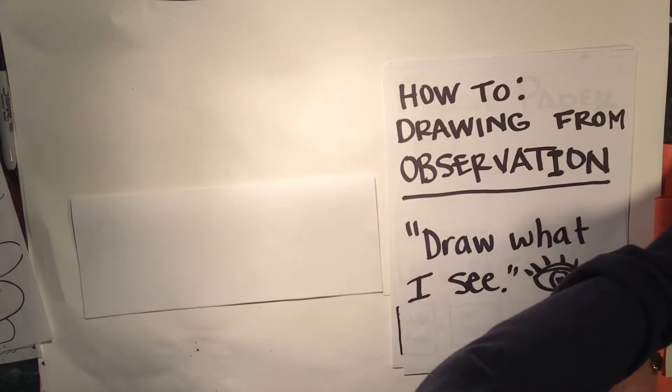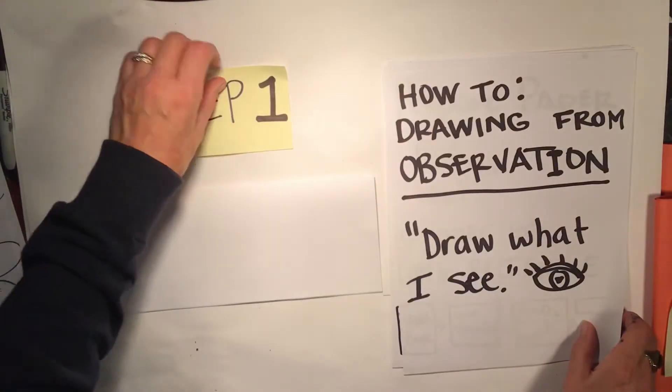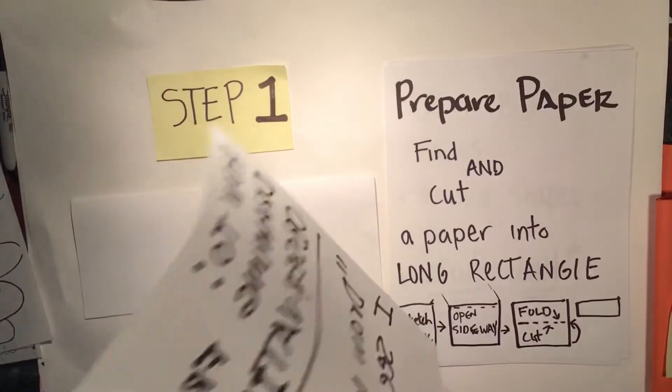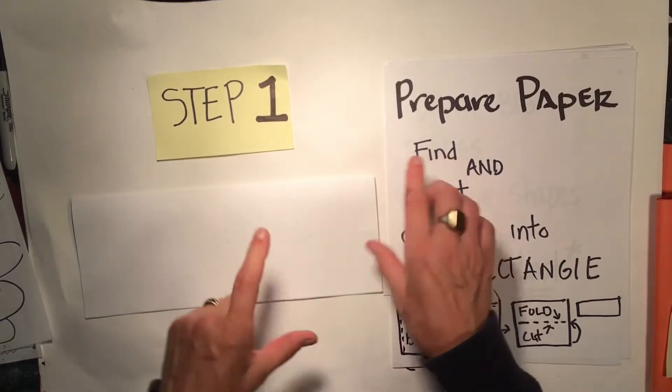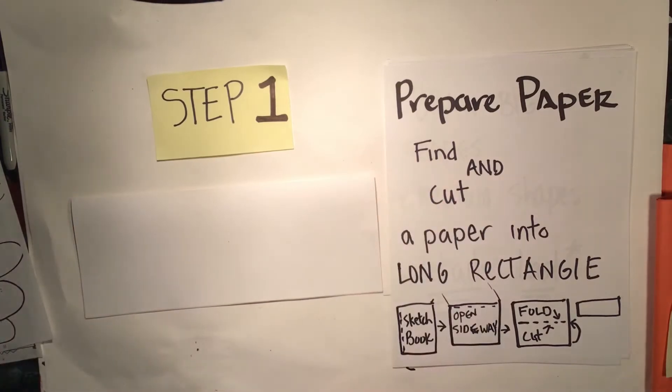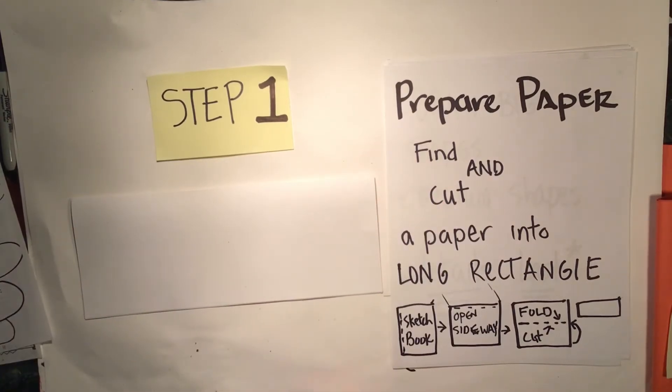Step one: preparing the paper. You have a couple choices. You can either find a long, thin rectangular piece of paper or cut one from your sketchbook.